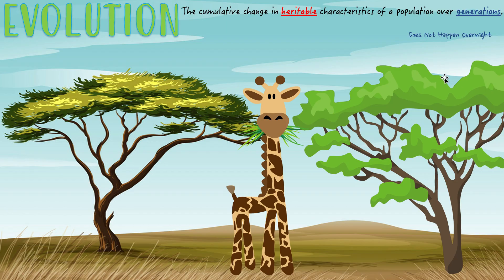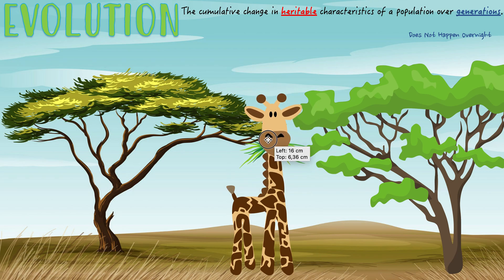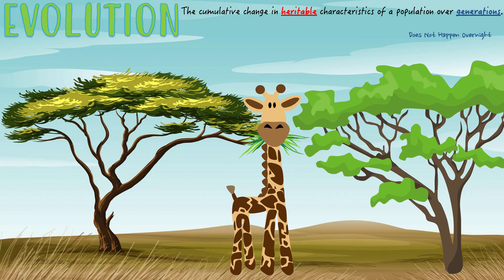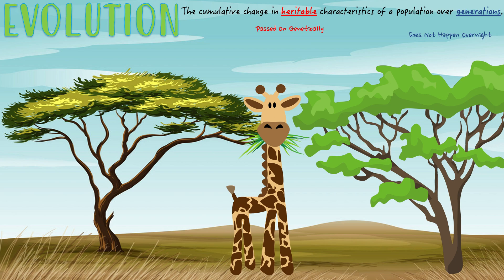Population is also important here, because evolution doesn't happen in just one organism of a species — it happens overall in all of them. You wouldn't just see one giraffe with a super long neck and all the rest with really short ones. It happens across the entire population, the entire species. And heritable — it's genetics. The traits need to be passed on to the next generation, and the next, until this change happens slowly over time.